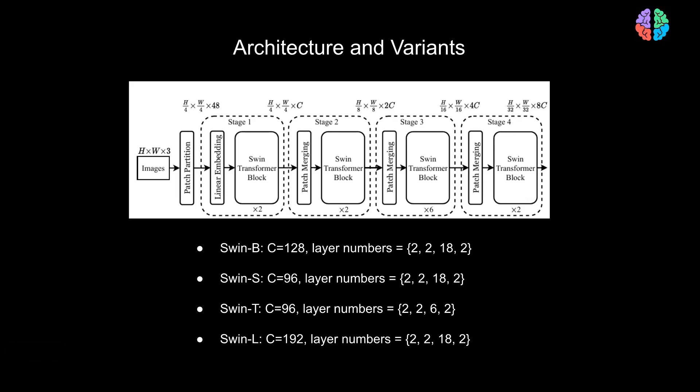They don't just stop here. The paper also proposes four variants of the Swin Transformer architecture. By changing the value of C from 96 to 128 and 192, you get these variants. You also change the number of blocks at each stage, say from 6 to 18 or keeping them to 2. You get different sizes of the network with different compute levels.